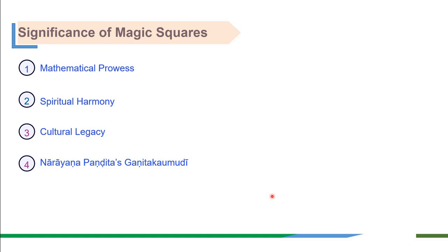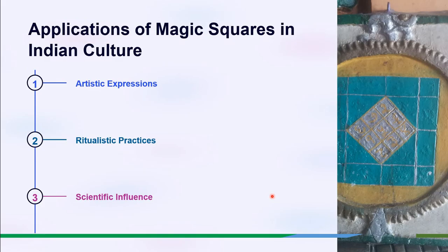Toying with magic squares is indeed positively recreational and is known to have fascinated even the greatest of mathematicians. Magic squares influenced Indian art, architecture and literature, illustrating their diverse cultural applications. They were used in religious ceremonies and cultural traditions, signifying their spiritual and ritual significance. Their presence extended to scientific concepts, demonstrating a holistic impact on various knowledge domains in Indian society.